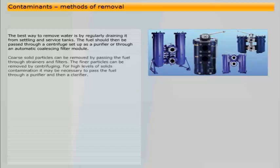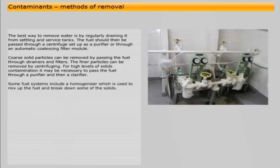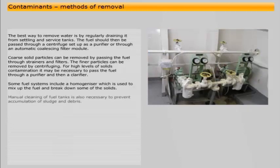Coarse solid particles can be removed by passing the fuel through strainers and filters. The finer particles can be removed by centrifuging. For high levels of solids contamination, it may be necessary to pass the fuel through a purifier and then a clarifier. Some fuel systems include a homogenizer, which is used to mix up the fuel and break down some of the solids. Manual cleaning of fuel tanks is also necessary to prevent accumulation of sludge and debris.